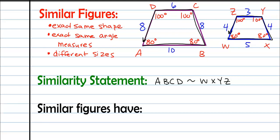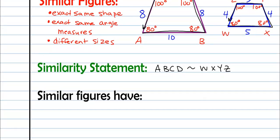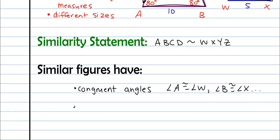So what that tells us is that our similar figures have congruent angles. Right, so there's in this case four congruent angles. So if we wanted to list a couple of them we could say angle A is congruent to angle W, and we could say that angle B is congruent to angle X, and so on. Similar figures also have proportionate sides.